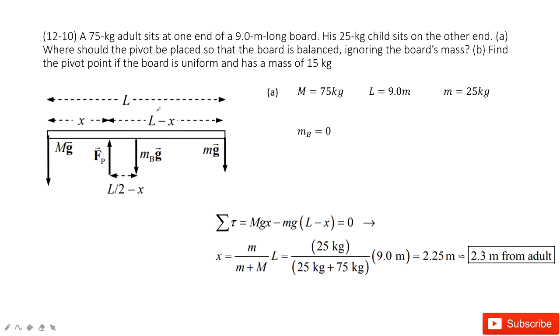In the first equation, we ignore the mass of the board, so Mb is zero. So we only have three forces: capital Mg for the adult, small mg for the child, and Fp, the supporting force.